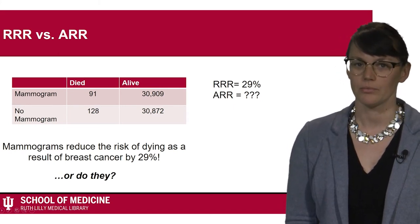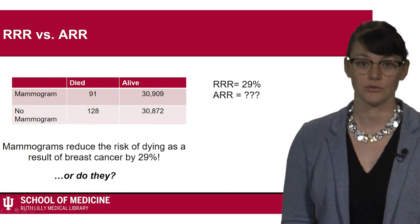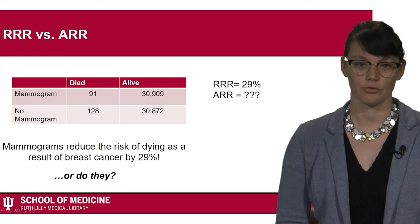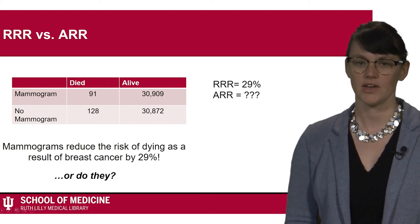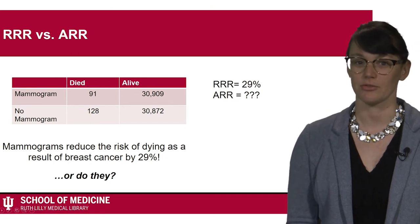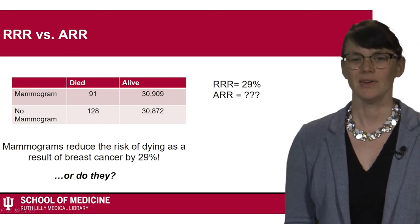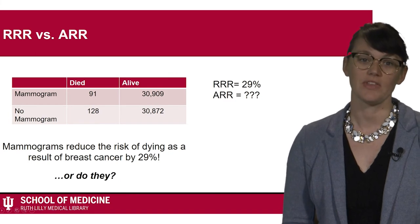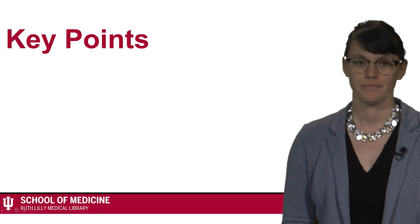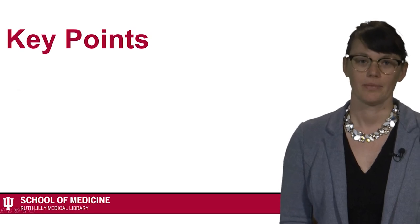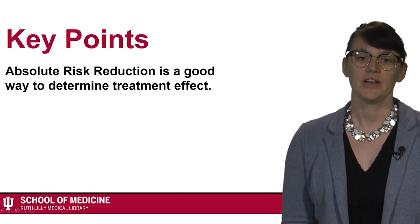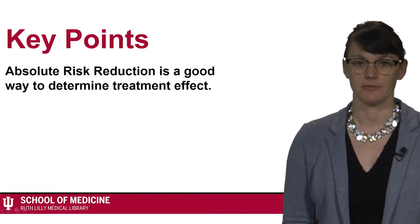To calculate the ARR, we subtract the risk in the experimental group — 0.03% — from the risk in the control group — 0.04% — to get 0.01%. That's a big difference from the RRR. In a later video, you'll find out how to use the ARR to calculate numbers needed to treat. Remember, absolute risk reduction is not often reported in studies, but it is useful for determining treatment effect.